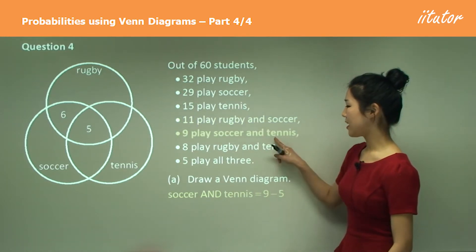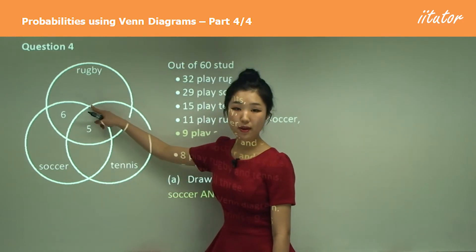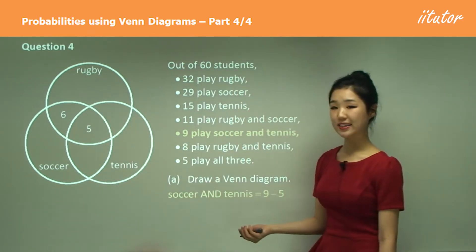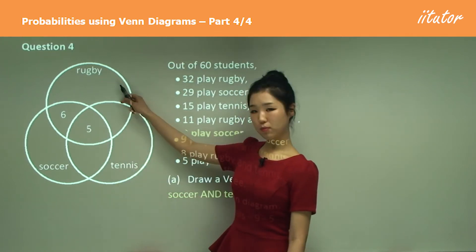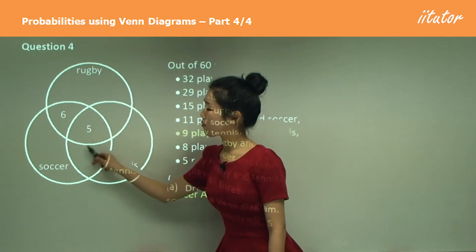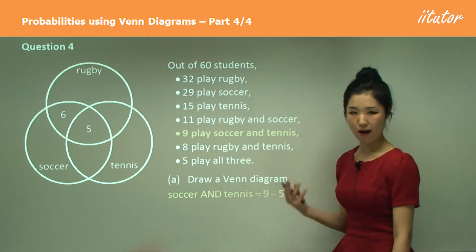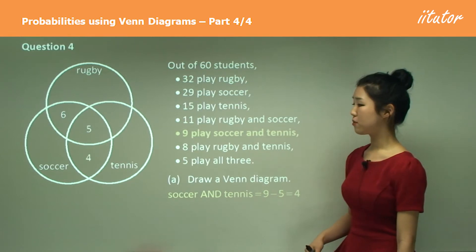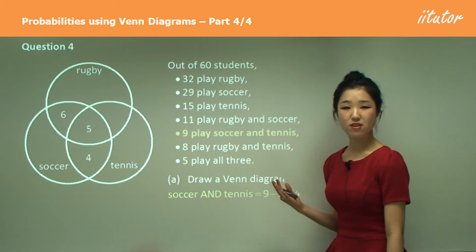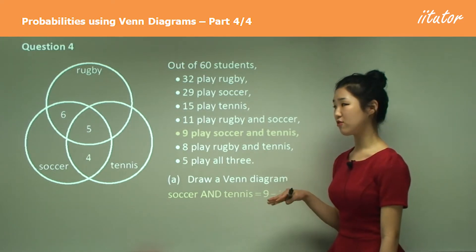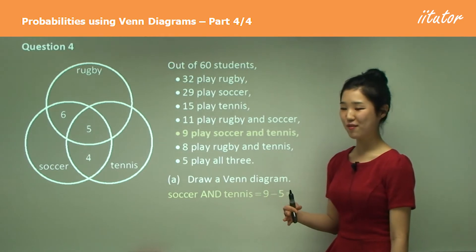Now soccer and tennis: there's nine. This whole football-looking shape is for people who play soccer and tennis. But we know that five of those people also play rugby. So to find the number who just play soccer and tennis, it's nine minus five, which is four. So you put the four in there. Try the rest by yourself if you like, then follow along with me.